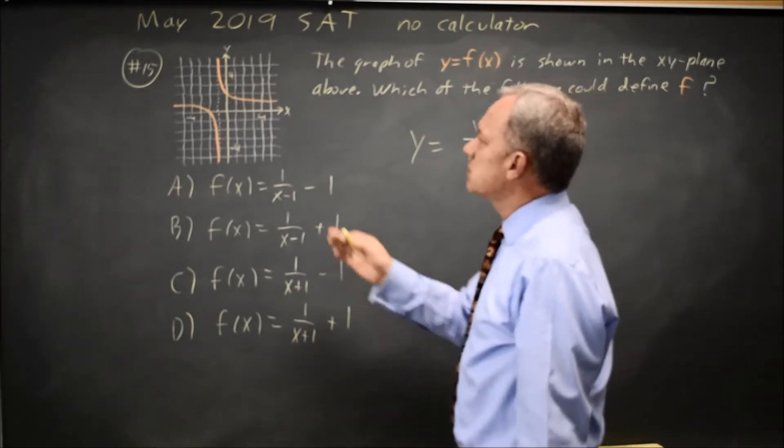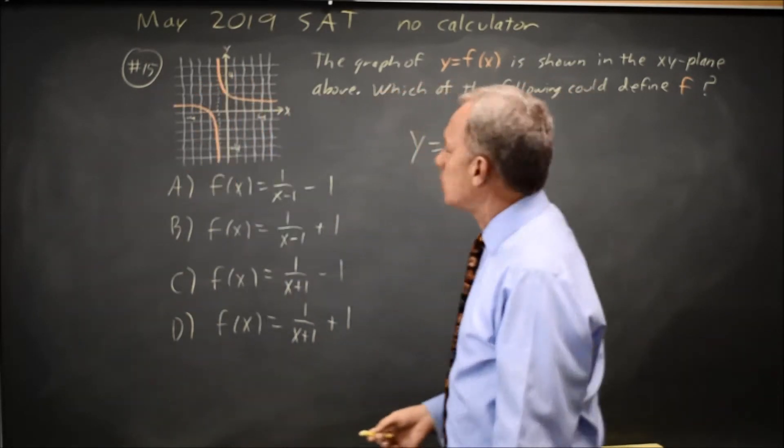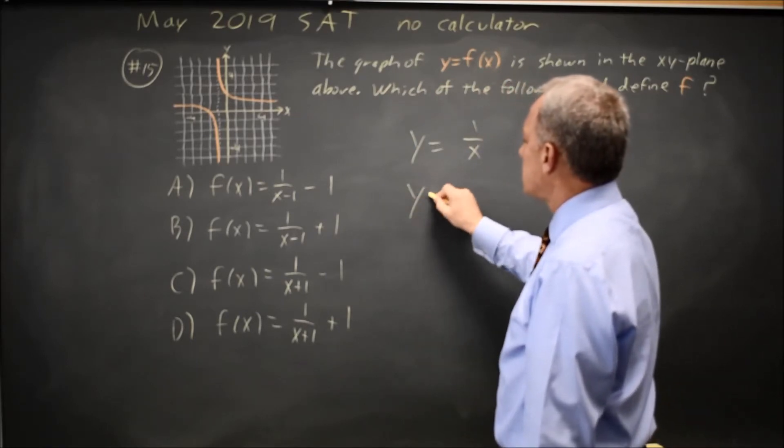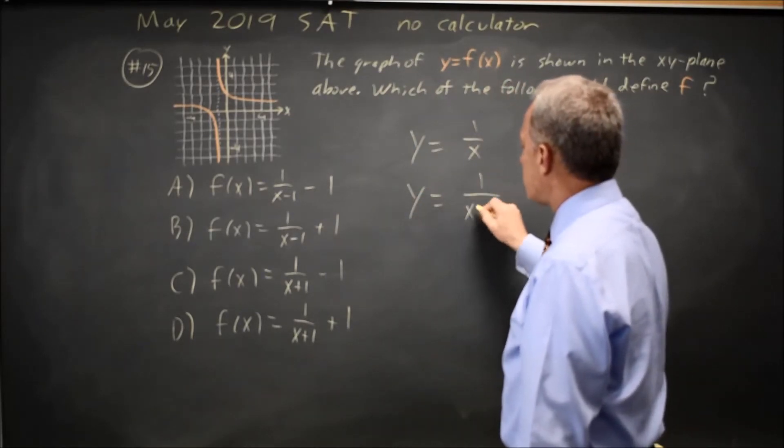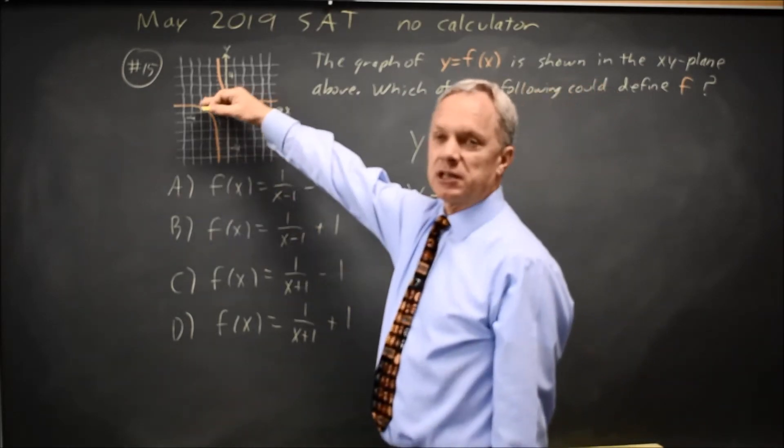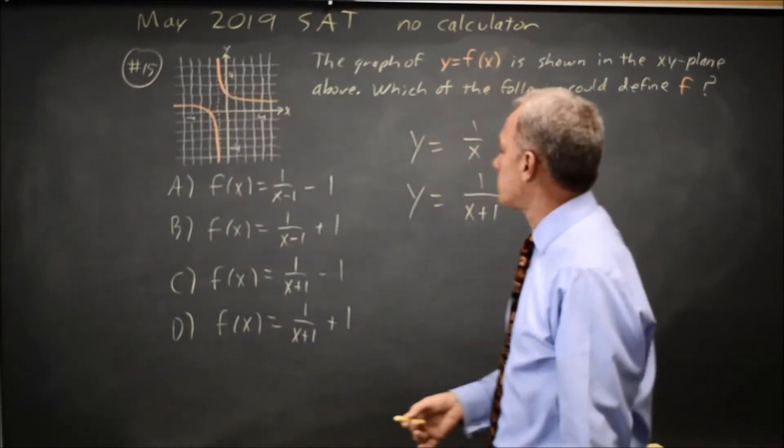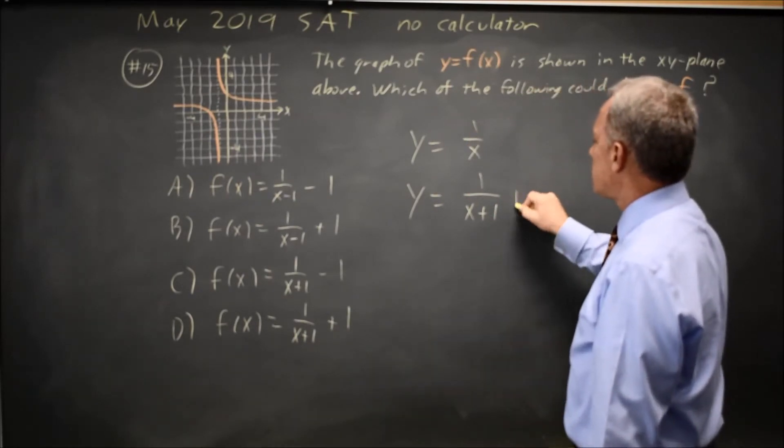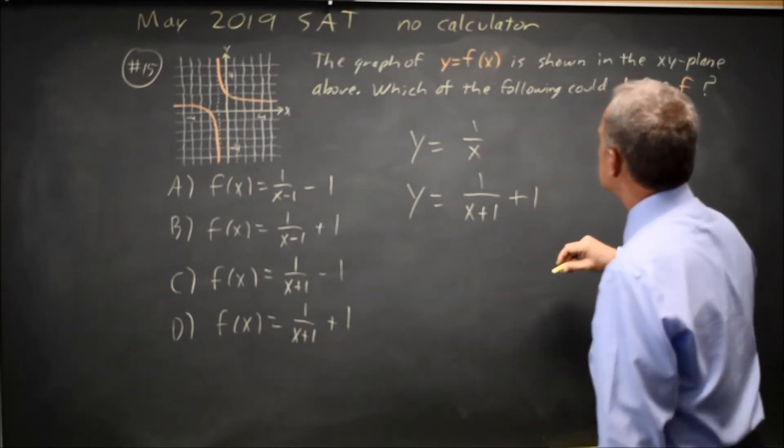Since this is translated to the left by 1, we replace x by x minus negative 1, which is x plus 1. This graph is also translated up by 1 from y equals 1 over x, so we then add 1 to the function.